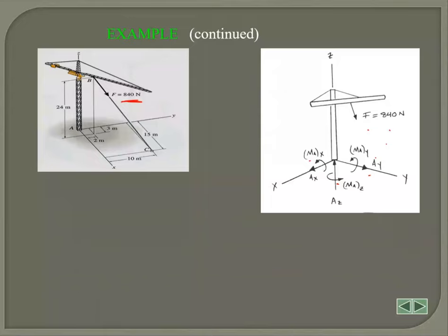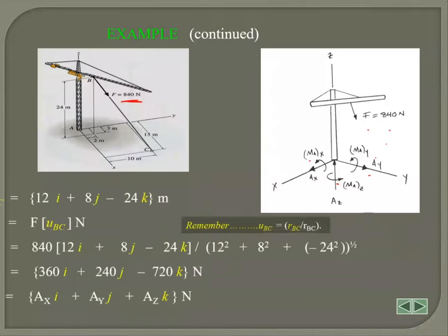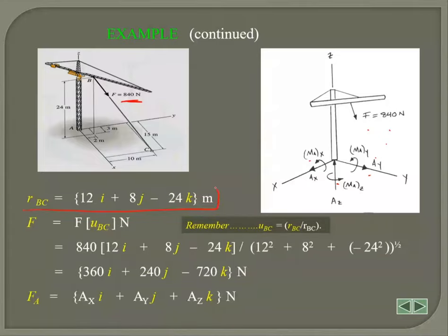So how can I do that? How can I convert this force into a vector form? Yes, you're very much right here. BC, position vector from B to C. You got the position vector, you got all the dimensions given here, look, all the dimensions given. So you can get your position vector out.